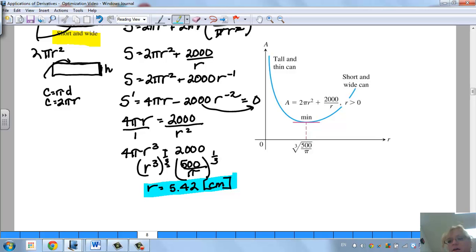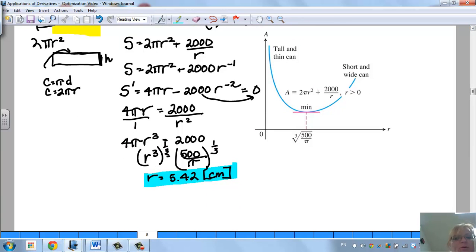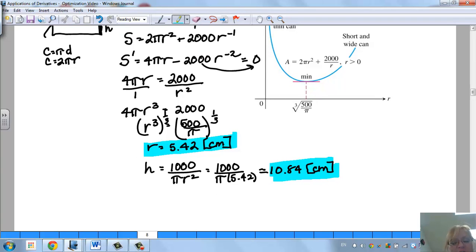Now how do I find the height? Well, the height is way back up here. We said the height was 1,000 over pi r squared, so I'm actually going to plug it back into that other blue equation here. So the height is going to equal 1,000 over pi r squared equals 1,000 over pi 5.42 squared is roughly 10.84 centimeters.